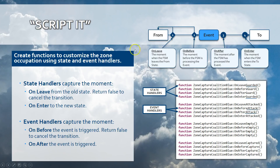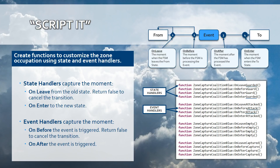Bear with me — this is really key, otherwise you won't understand how to capture state transitions. When a transition happens from one state to another due to an event triggered within the finite state machine, you have four moments — moment one, two, three, four — that you can capture and build your own logic upon.